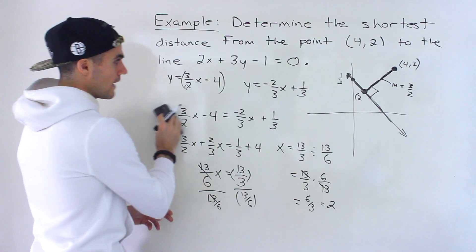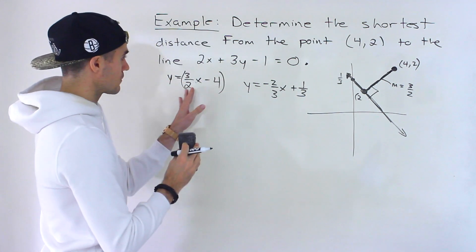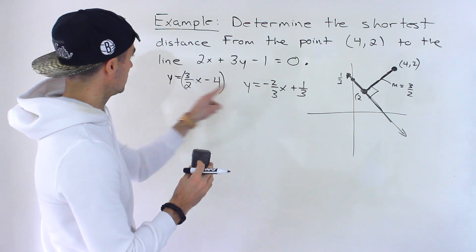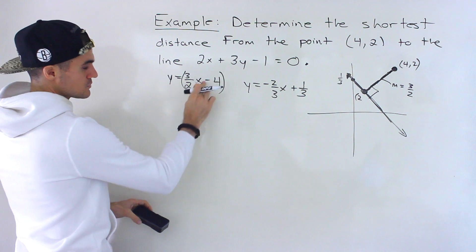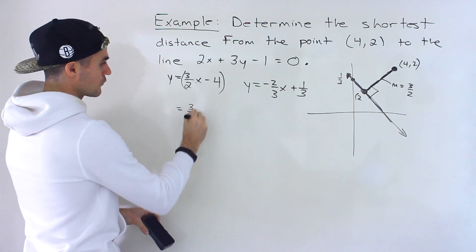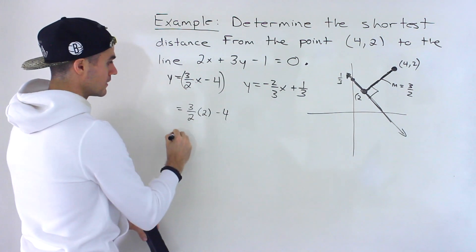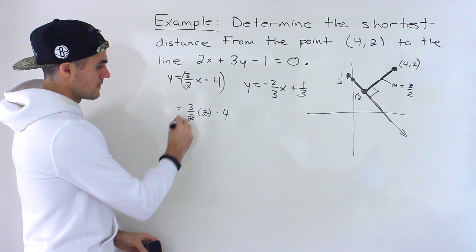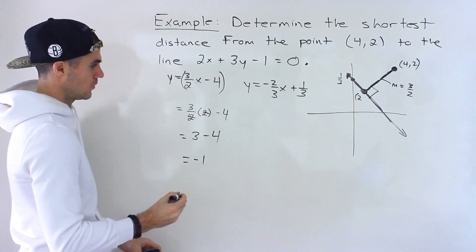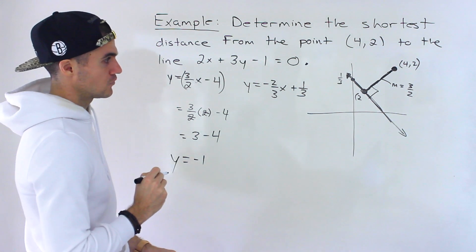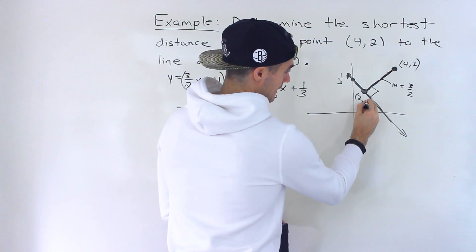Now plug x equals 2 into the perpendicular line equation y equals 3/2 x minus 4. Notice the 2s cancel: y equals 3 minus 4, which gives y equals negative 1. So the point of intersection is (2, negative 1).